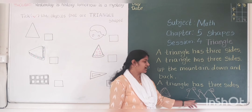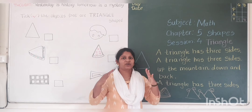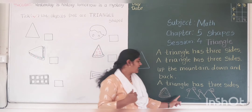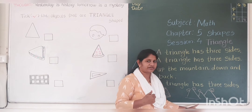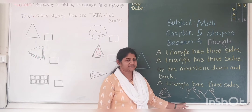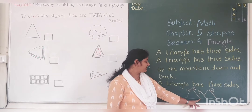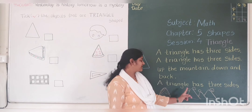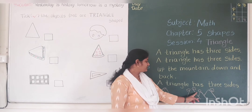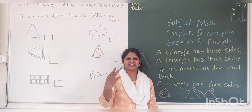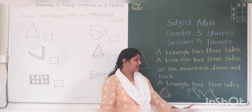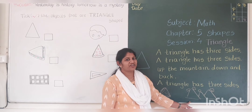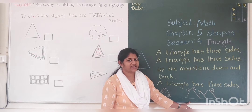This is a mountain. Mountain has how many corners? Let's count. 1, 2, 3. 3 corners. And 1, 2, 3. 3 sides. Mountain has which shape? Triangle shape.